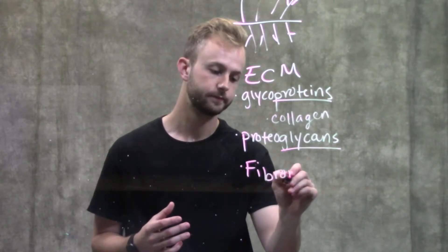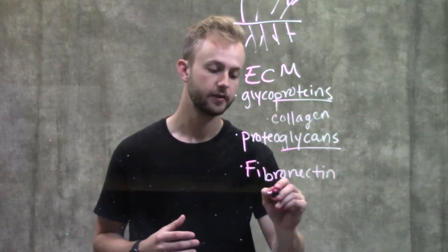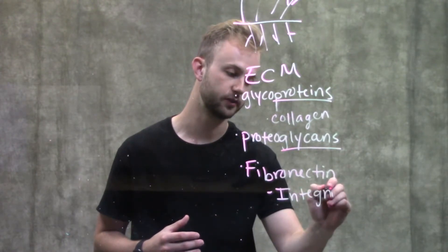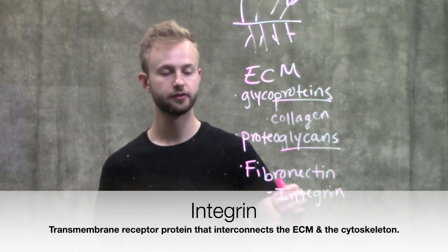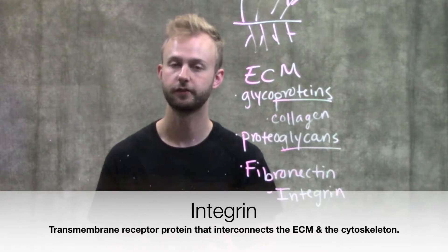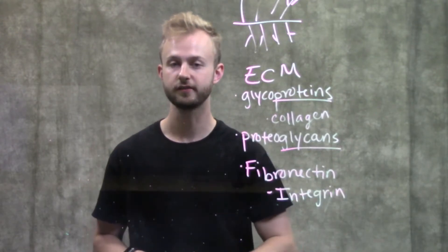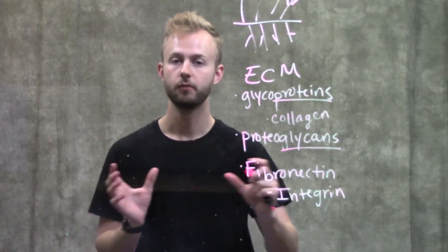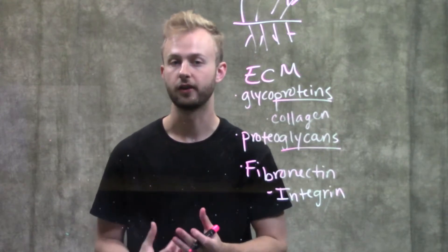We can attach to molecules of fibronectin in the extracellular matrix by using something called an integrin receptor. These are transmembrane proteins on the surface of our cells that can interact with fibronectin and then send signals to the inside of our cells to let it know what's going on, as well as help the cell move along the extracellular matrix to get to the right spot within our tissues.